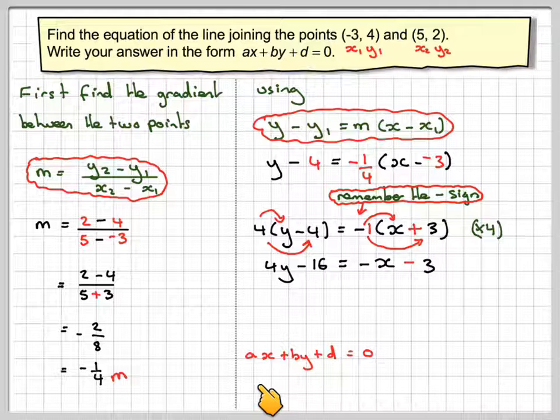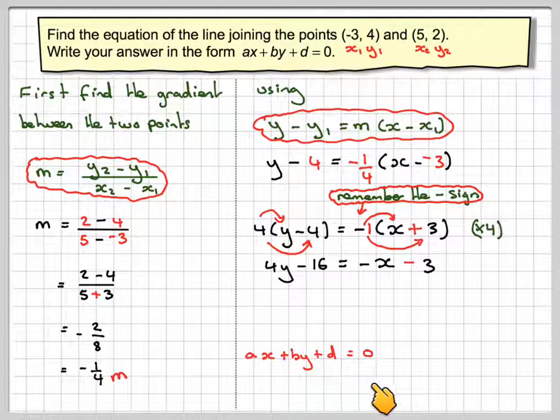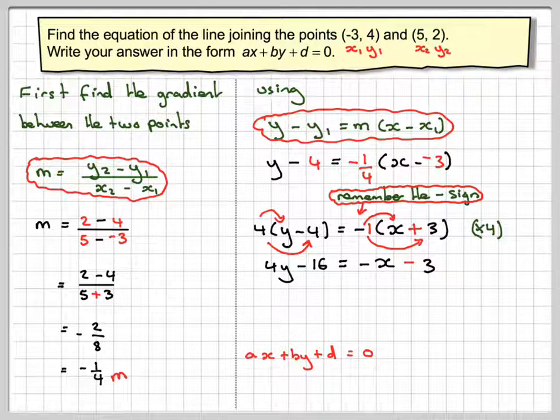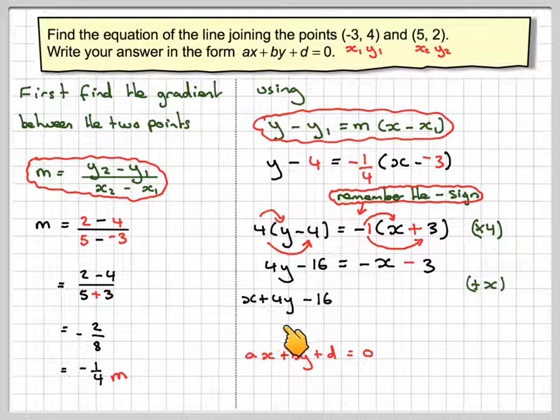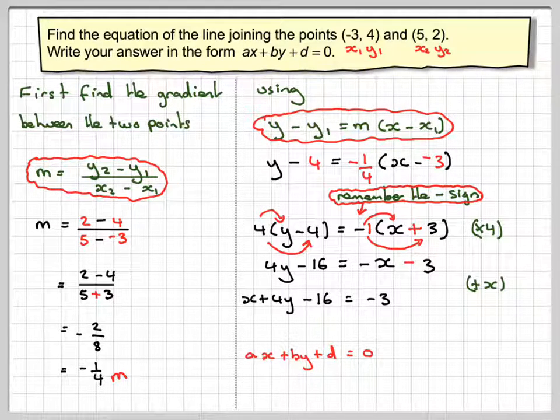We're aiming to put it in the format ax + by + d = 0. Usually, a is positive, so we're going to do the opposite of minus x, which is to add x. So we're going to have x + 4y - 16 on this side, and we're still going to have -3 on this side.